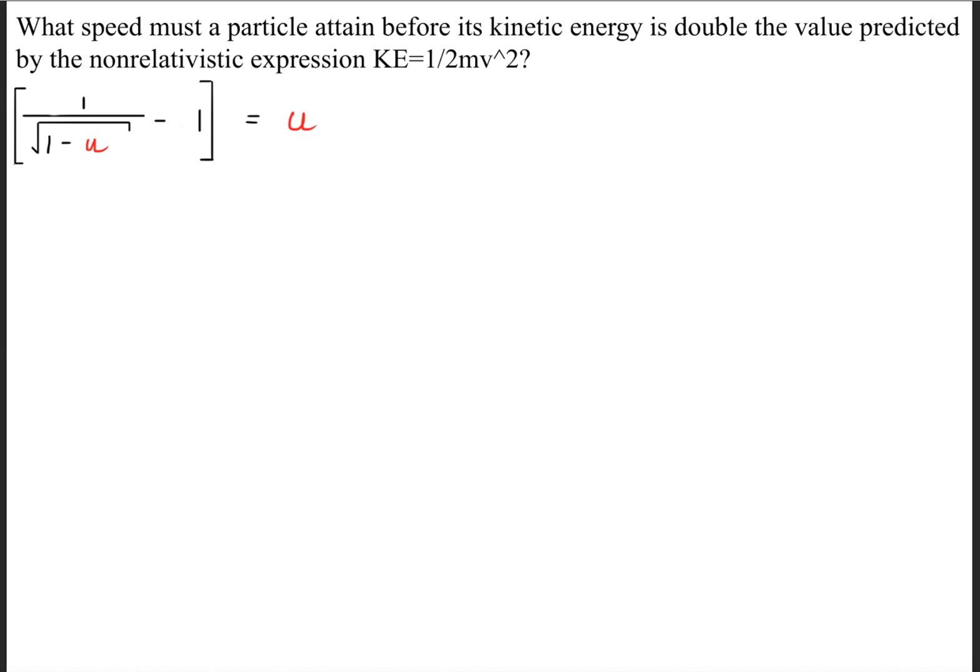So this is where the question deviates from the physics and focuses more on the algebra. We have to solve for u and find the roots in this equation. What I'm going to do is move 1 to the other side of this equation. Next, I'm going to square both sides so that I get this form right here. Afterwards, I expanded this binomial so that I get 1 divided by 1 minus u is equal to u squared plus 2u plus 1.